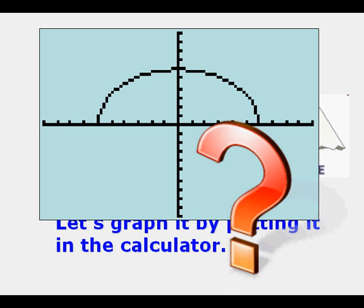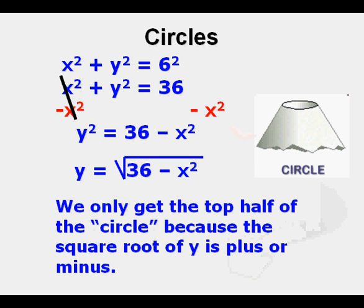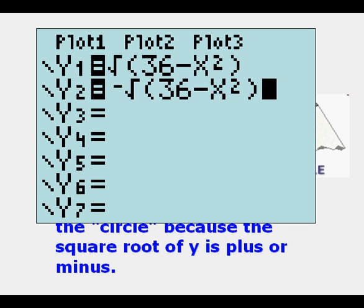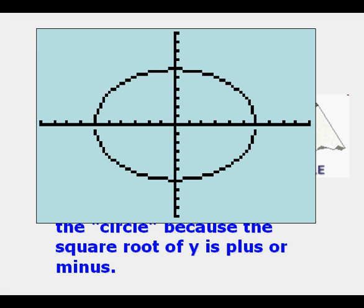We only get the top half of the circle because the square root of y is plus or minus. If you take the square root of 16, for example, it has two roots: four and negative four. So if we go to y equals and put in y2 the negative of that top one and graph it, we get an enclosed conic, but it's not circular.